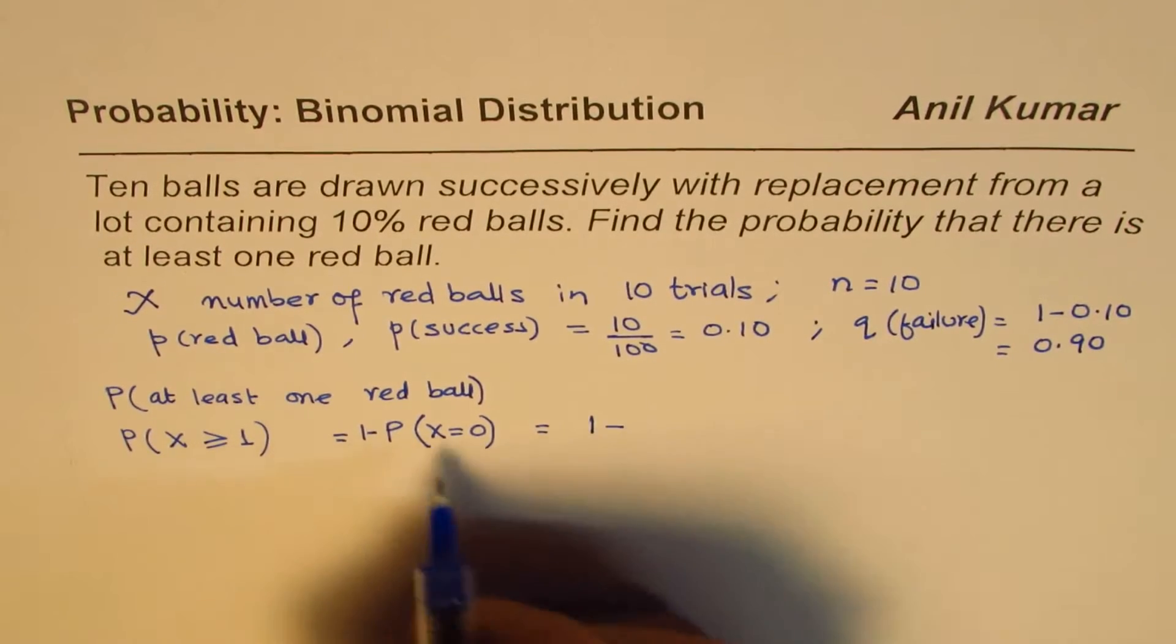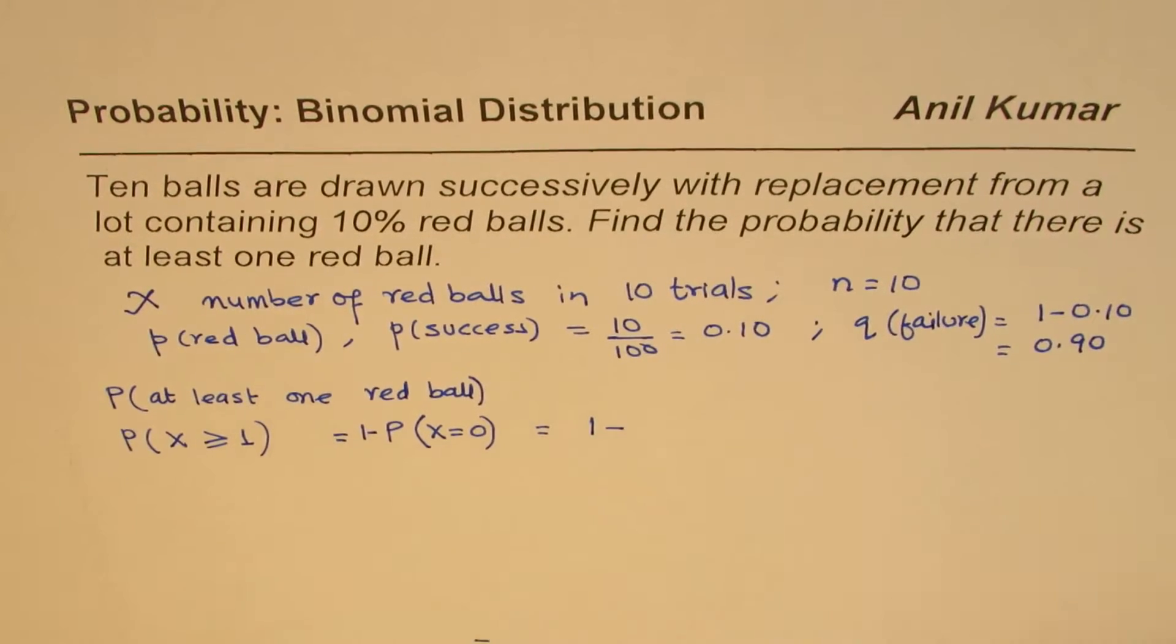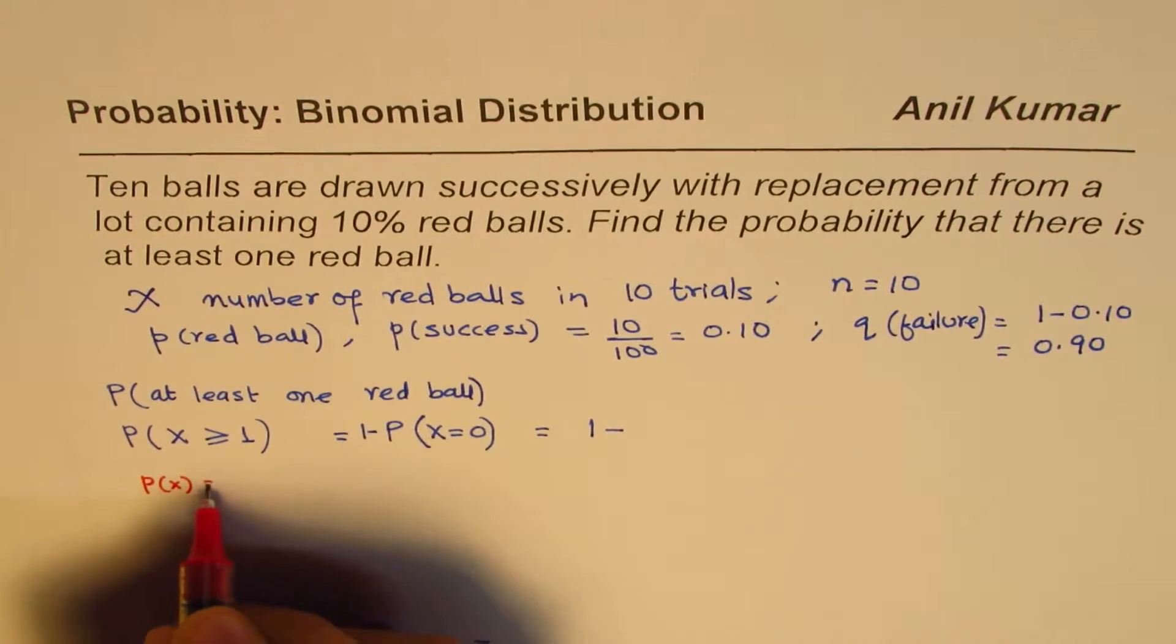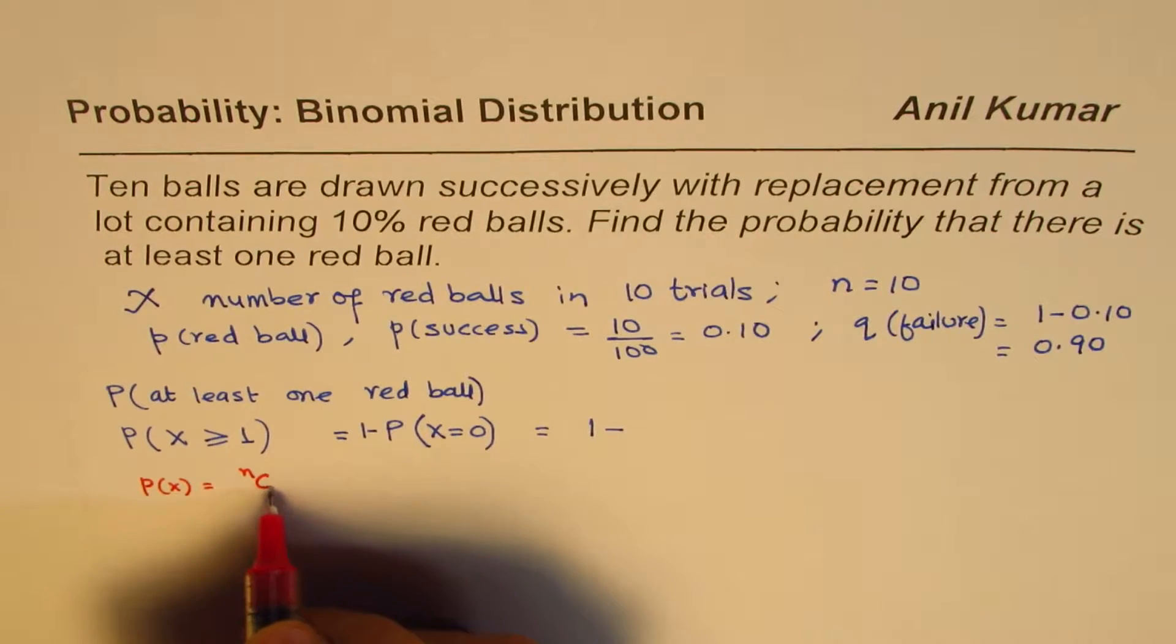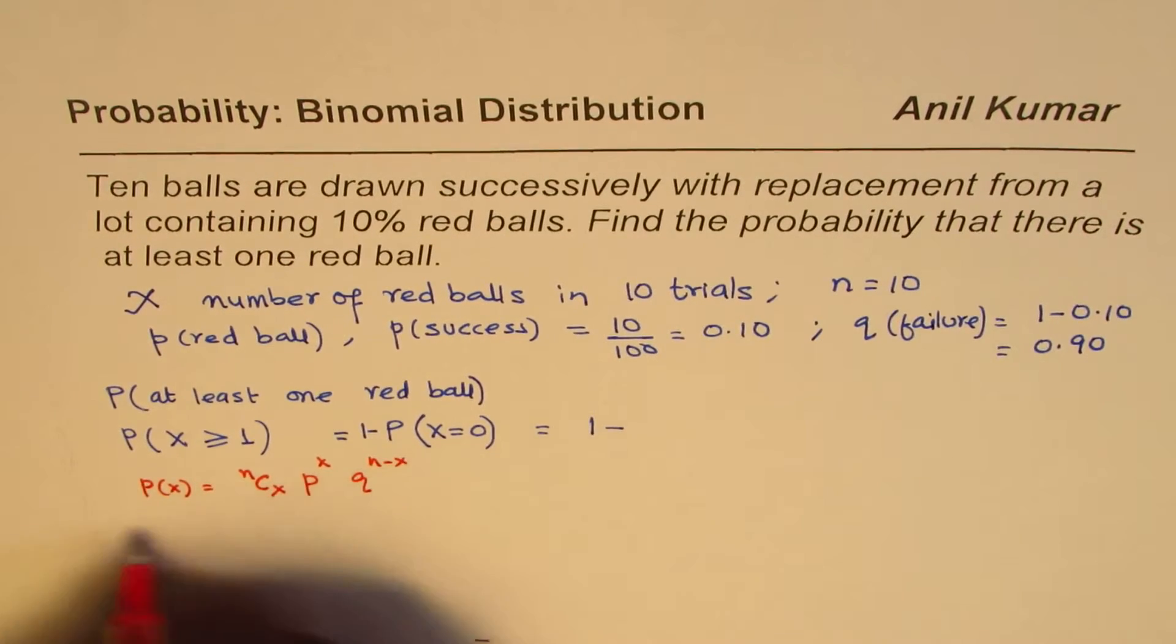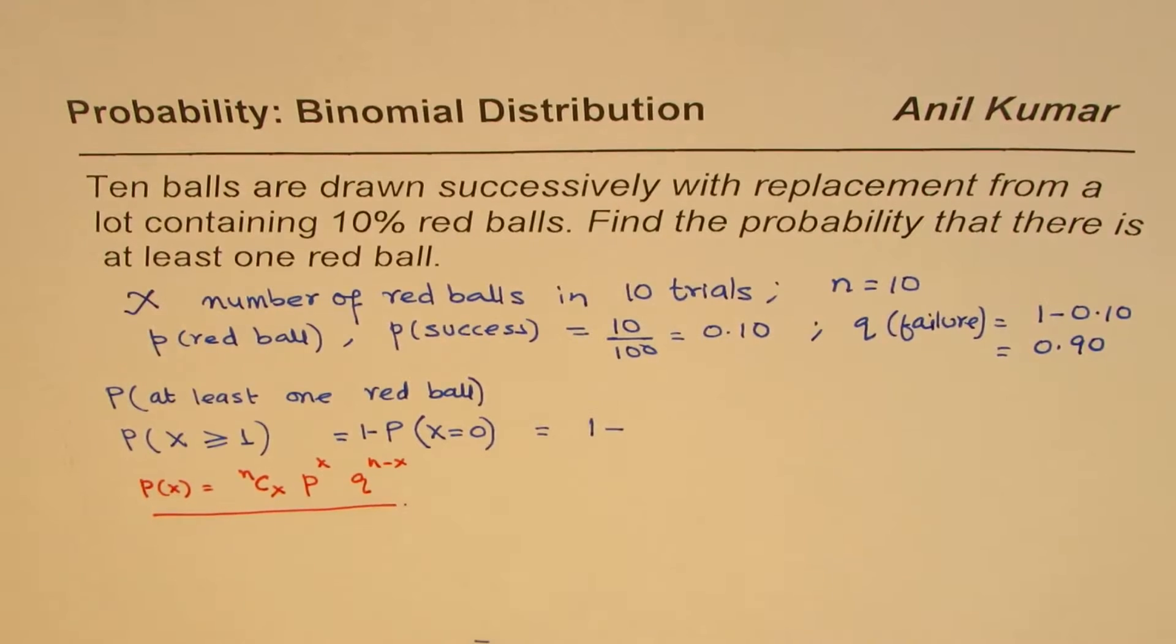Now, 1 minus what is the probability? In general, the formula is: for any small x, the formula is nCx, where n is the number of trials, p the success to the power of x, and q failures, n minus x. So that is the formula for binomial distribution which we are going to use here.